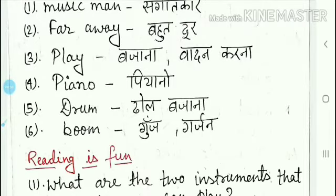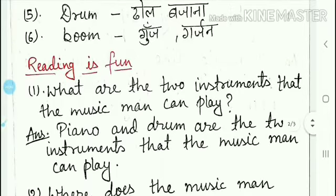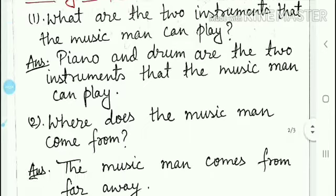In page number 124, the first topic is 'Reading is Fun.' There are two question answers. The first question is: what are the two instruments that the music man can play? Kaun se do instruments jo music man baja sakta tha. The answer is: piano and drum are the two instruments that the music man can play.